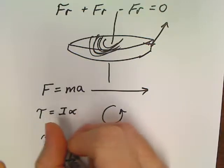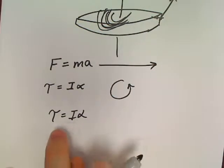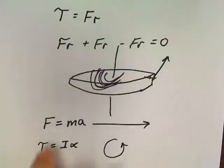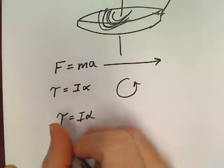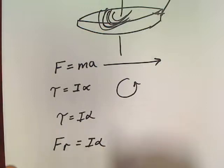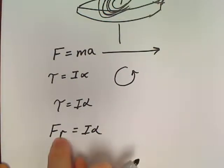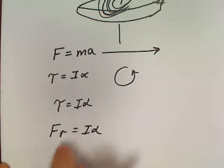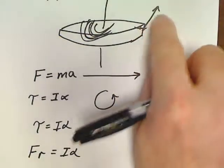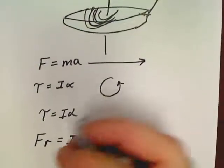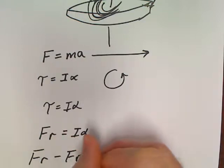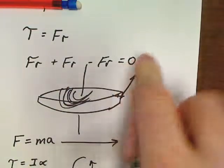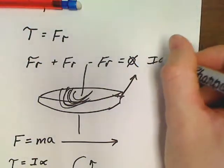Some problems are as straightforward as just computing Iα. The harder questions have you use FR = Iα directly. If there's more than one torque and both help spin the object, you write FR + FR = Iα. If one opposes the other, you subtract. Pretty much every equilibrium FR problem you did before could be set equal to Iα if the object starts to rotate.